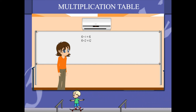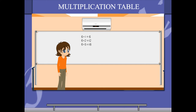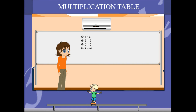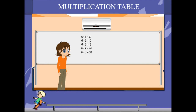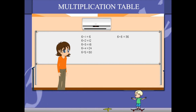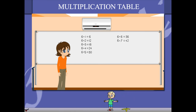6 1's are 6, 6 2's are 12, 6 3's are 18, 6 4's are 24, 6 5's are 30, 6 6's are 36,